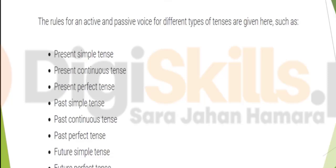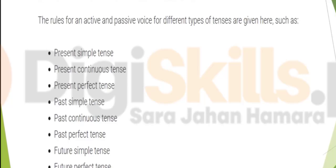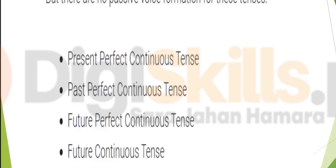The rules for active and passive voice for different tenses are: present simple, present continuous, present perfect, past simple, past continuous, past perfect, future simple, and future perfect. However, present perfect continuous, past perfect continuous, future perfect continuous, and future continuous are not converted into passive voice because the structure does not allow it.